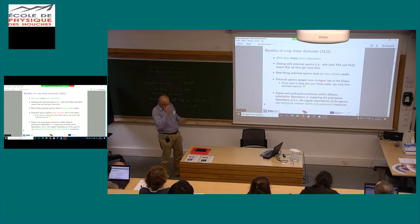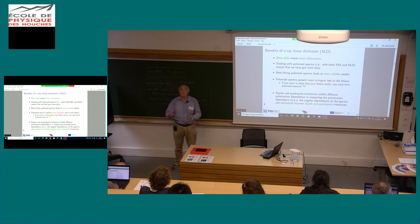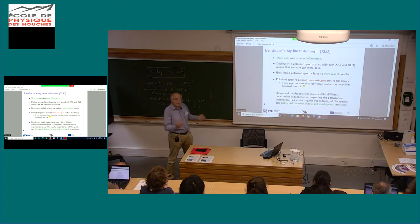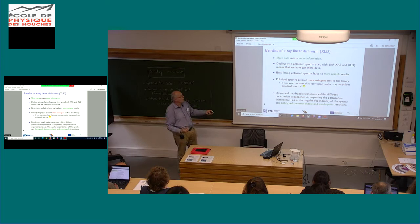What is XLD linear dichroism good for? Generally, you have more data, and if you have more data you have more information. You often use X-ray absorption spectra to fit the structure, as in Maurizio Benfatto's talk, and more data makes your results more reliable. Polarized spectra also present more stringent tests for theory — it may happen that your calculation gives good results for the average spectrum, XAS, but fails for polarized spectra or dichroism. Practical advice: if you want to demonstrate that your theory works, it's better to stay away from the polarized spectra — you may learn something you don't want to know.